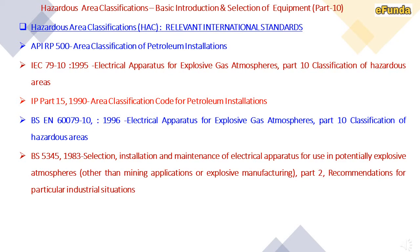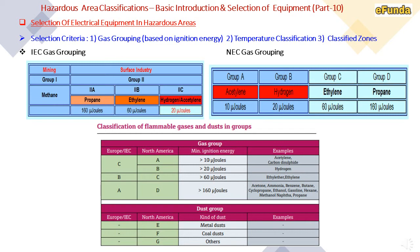Selection of electrical equipment in hazardous areas has three criteria: gas grouping based on ignition energy, temperature classification, and classified zone. IEC gas grouping: mining Group 1 is methane; surface industry Group 2A is propane at 160 microjoules; Group 2B is ethylene at 60 microjoules; Group 2C is hydrogen/acetylene at 20 microjoules. NEC gas grouping: Group A is acetylene at 10 microjoules; Group B is hydrogen at 20 microjoules; Group C is ethylene at 60 microjoules; Group D is propane at 160 microjoules.